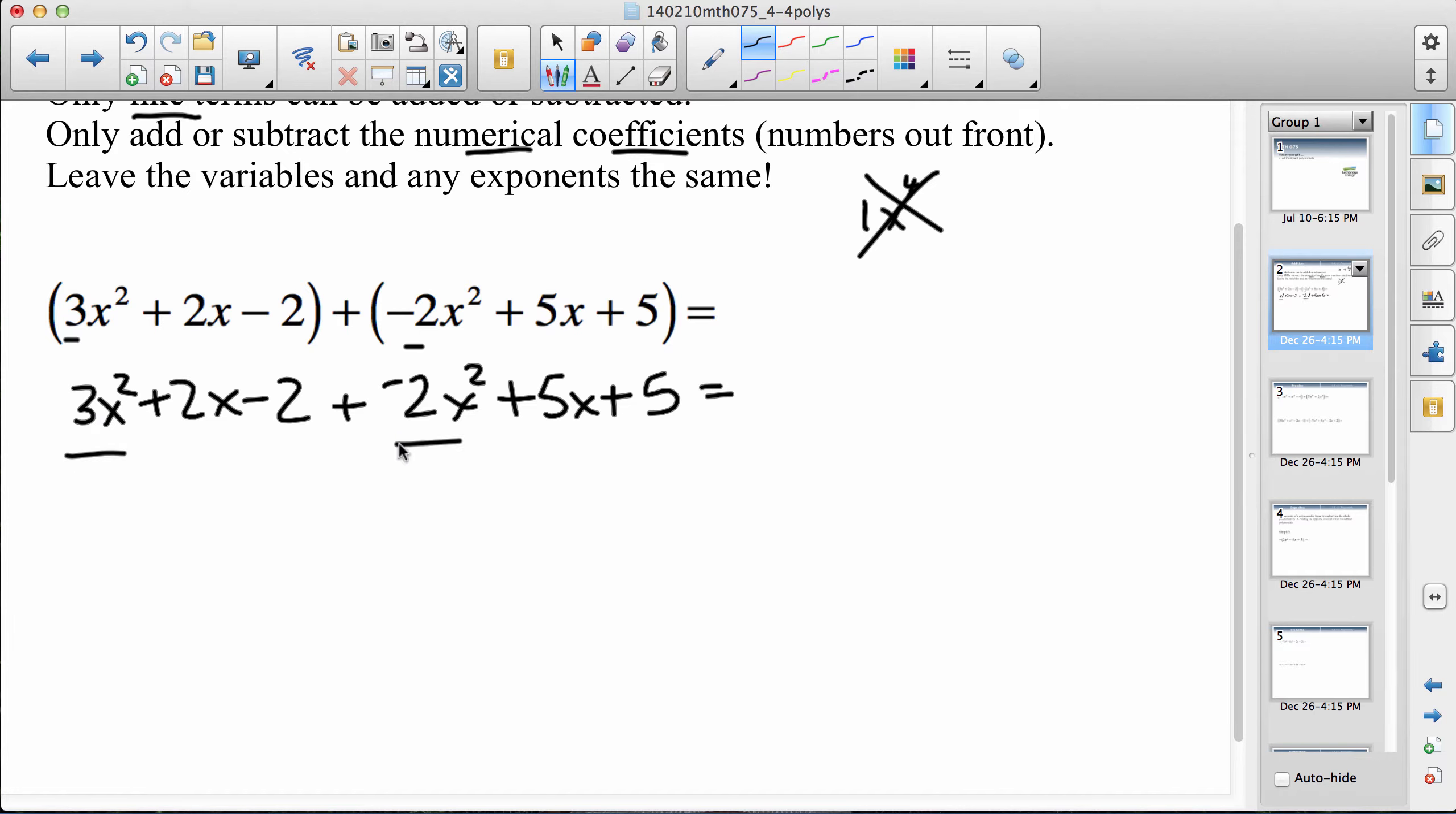There's some x squareds there, here's an x, there's an x, and here's a number and there's a number. So I might collect those and just write them together: 3x squared plus negative 2x squared plus 2x plus 5x minus 2 plus 5. If it helps you to write them in order that's okay, just be careful with the signs in front of the term that you're moving.